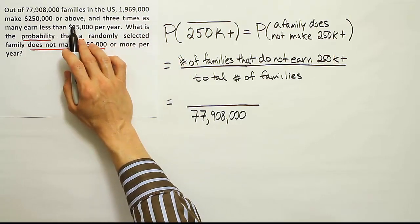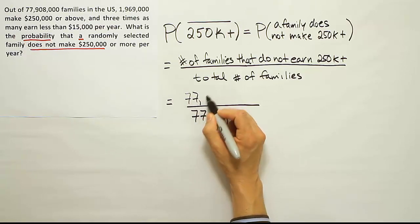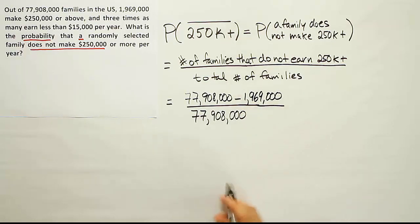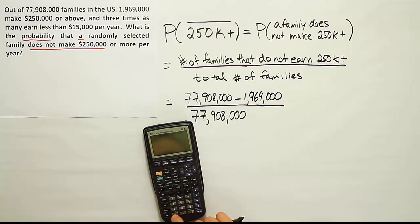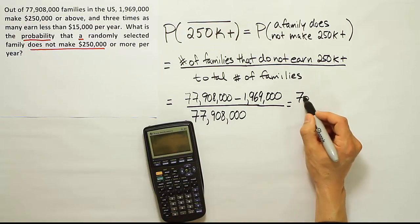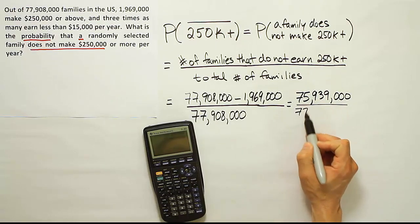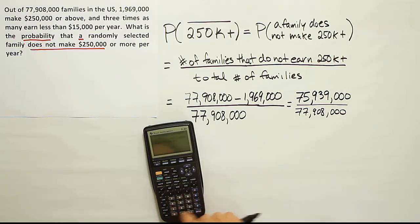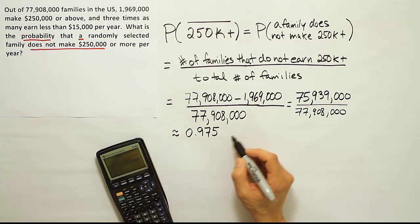If 1,969,000 made $250,000 or more per year, I can subtract that from the total to be left with the families that don't make it. So we do 77,908,000 minus 1,969,000, which gives us all the families that do not make $250,000 or more per year. Putting this in the calculator: 77,908,000 minus 1,969,000 equals 75,939,000. Dividing that by 77,908,000, we end up with approximately 0.975.